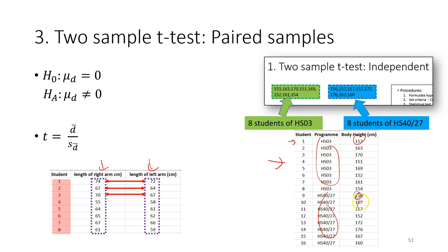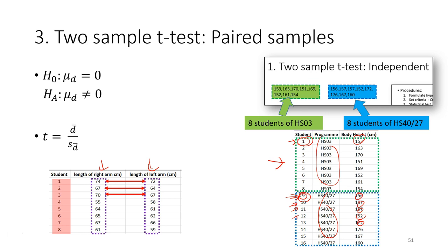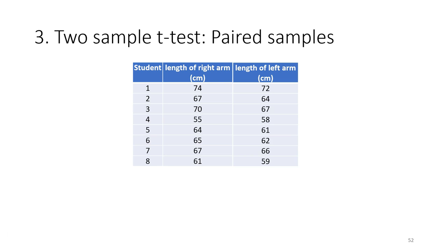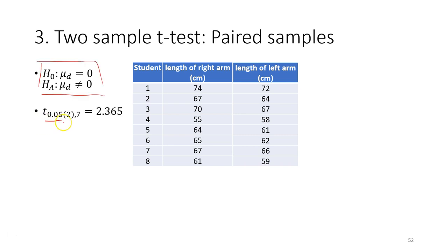In the paired case, each observation unit's measurements are not independent — they are dependent on each other. For the hypothesis, we need to find the critical value: look for alpha, determine one-tail or two-tail test based on the hypothesis, and find the degree of freedom. In this case with eight students, the degree of freedom is 8 minus 1, which equals 7. Then refer to the t-table based on alpha, tail, and degree of freedom to obtain the critical t.